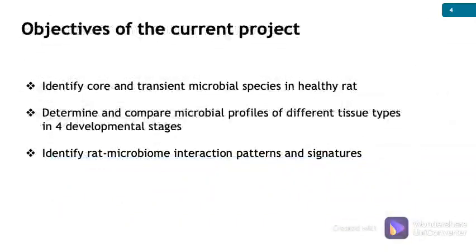This is the objective of the current project. We want to identify core and transient microbial species in healthy rats, just as HMP-1 did previously. We also want to determine and compare microbial profiles of different tissue types in four developmental stages. Finally, we want to identify rat microbiome interaction patterns and signatures.